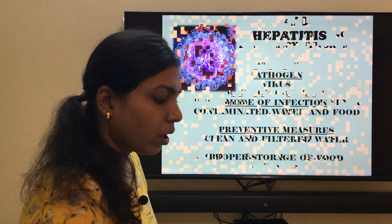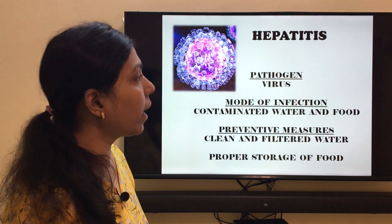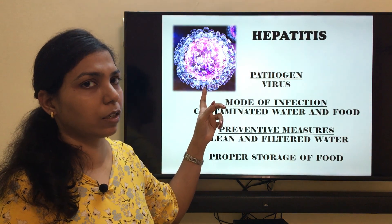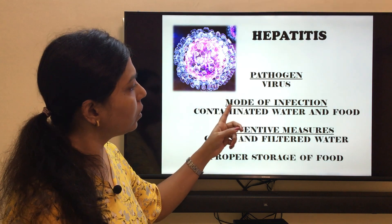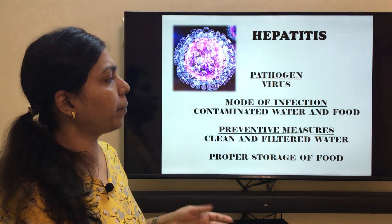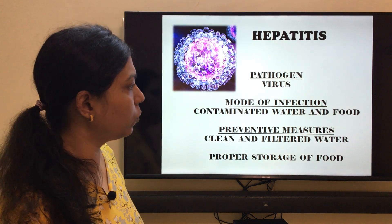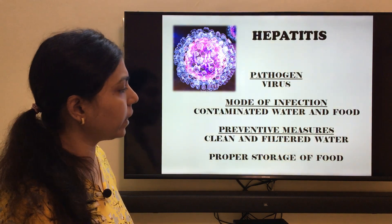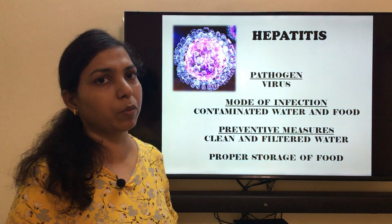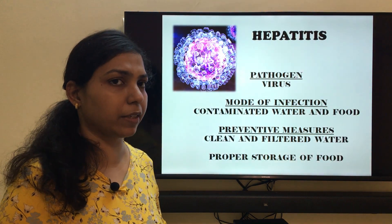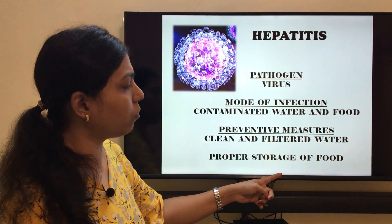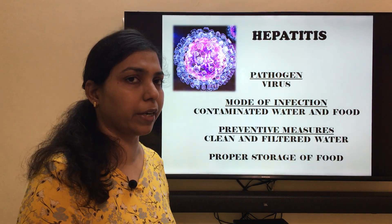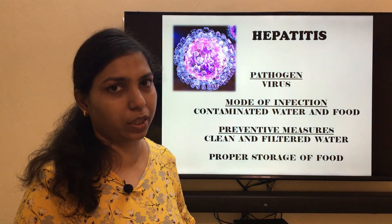Next is hepatitis. This is how the hepatitis virus looks under an electron microscope. The mode of infection is through contaminated water or food. Preventive measures include consuming clean, boiled, and filtered water, proper storage of food, and making sure food is covered, clean, and prepared under hygienic conditions.